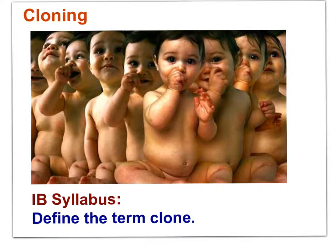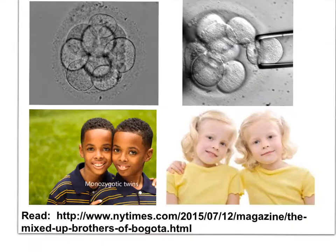Shifting focus to cloning: clones are groups of genetically identical organisms derived asexually from a single original parent cell. Many plant species, and some animal species, have natural methods of cloning. Plants can grow shoots, stolons, or rhizomes that produce genetically identical plants.